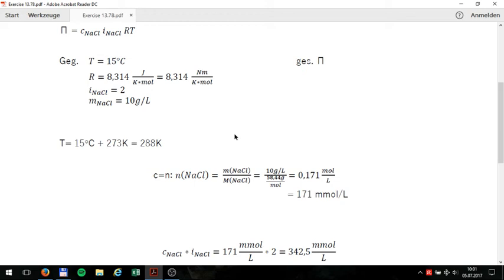In the next step, I calculate the concentration of NaCl. In this case, one can equate C with the material amount of NaCl, N. And currently, by the formula N equals little m divided by big M, I divided the mass of 10g per liter by the molar mass of 58.44 g per mol.